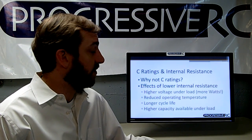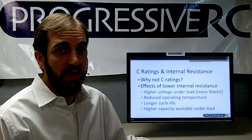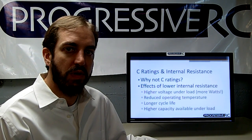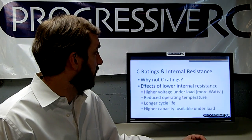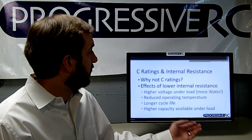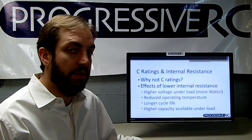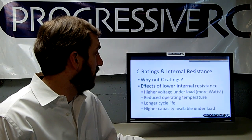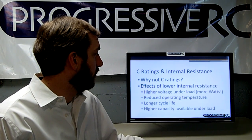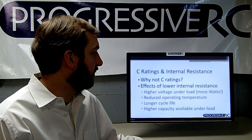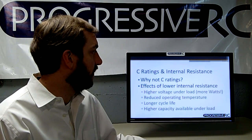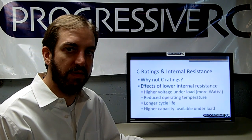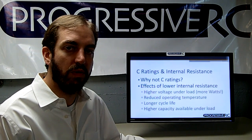This brings us to internal resistance, which is really getting at what C-ratings were attempting to measure. It determines the properties of the battery, such as voltage under load. The higher the voltage under load, the more watts you'll have available. You'll also have reduced operating temperature, longer cycle life, and higher capacity available if your battery has a lower internal resistance. Essentially, the lower the internal resistance, the higher the performance of the battery.